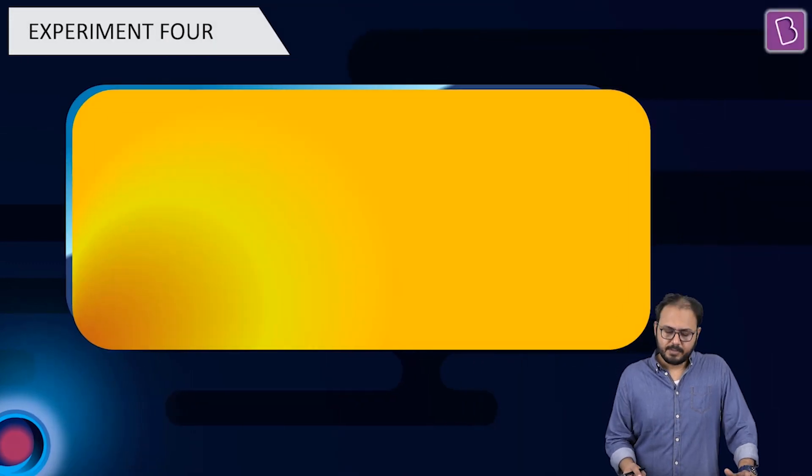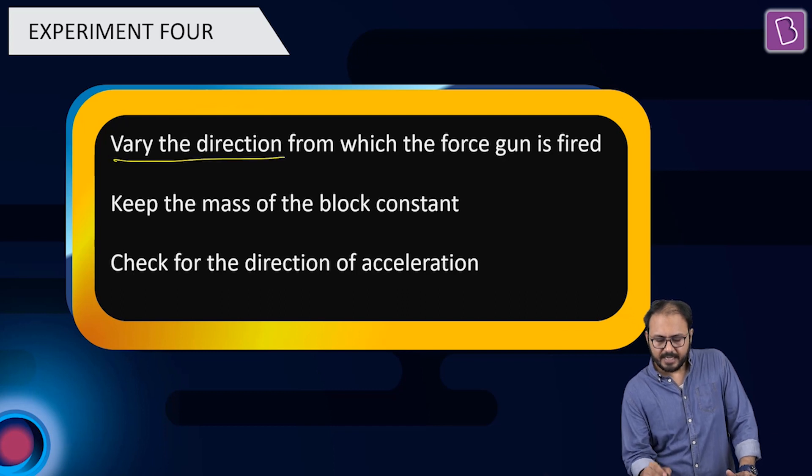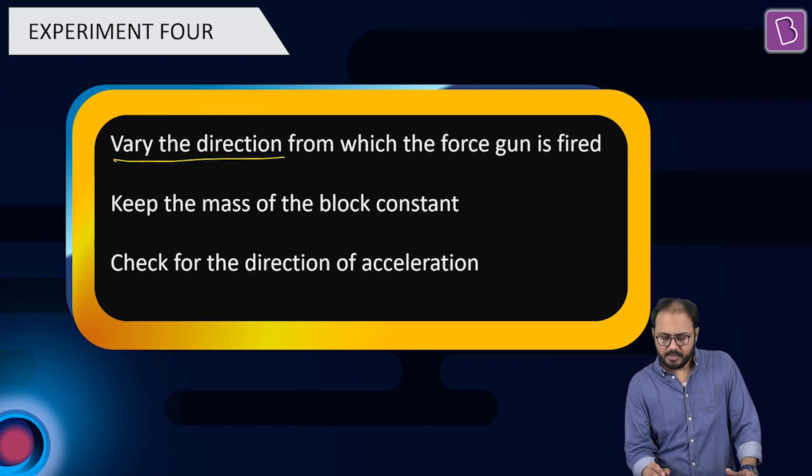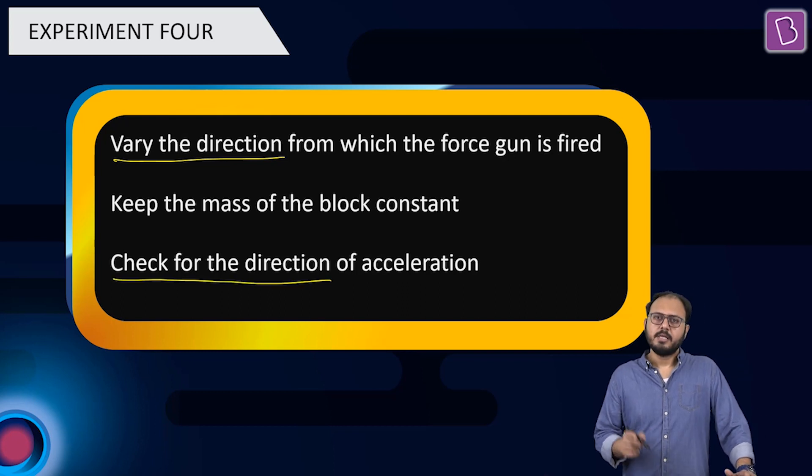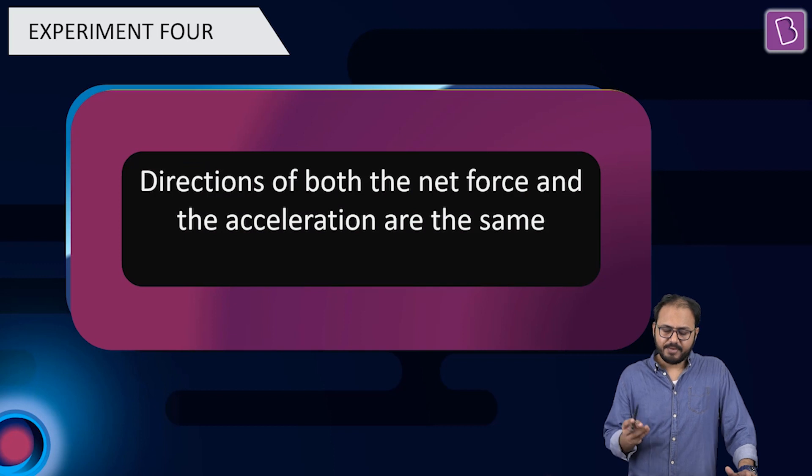One more experiment. This time, same force gun, same mass, but push it from different, different directions. Vary the direction. What happens now? Now, this time, we don't measure the magnitude of acceleration. Since we vary the direction, we also check the direction. I repeat. Since we vary the direction, we also check the direction only. And what do we have here, sir? What we have is that the direction of the net force and the direction of the acceleration turns out to be same.